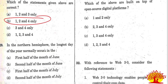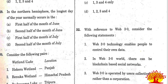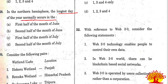Twenty-ninth question: in the northern hemisphere, the longest day of the year normally occurs when? Very simple question - the answer is Option B, the second half of the month of June.